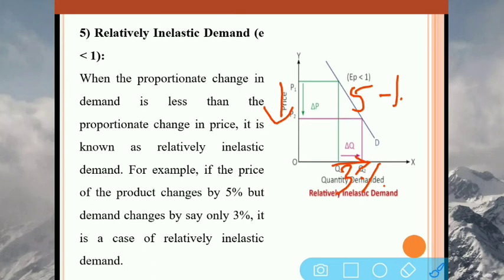So we have learned five types. Perfectly elastic demand: demand changes but there is no change in price. Perfectly inelastic demand: there is a change in price but no change in demand. Third, unitary: proportionate change in demand is equal to proportionate change in price. Then relatively elastic: proportionate change in demand is more than proportionate change in price. And relatively inelastic: proportionate change in demand is less than proportionate change in price.